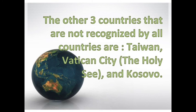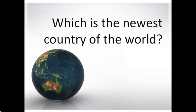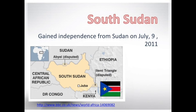What about the other three? These three countries not recognized by all countries are Taiwan, the Vatican City, and Kosovo. The newest country in the world is South Sudan, which gained independence from Sudan on July 9th, 2011. This happened as an outcome of a peace deal done in 2005 that ended the longest-running civil war in history.